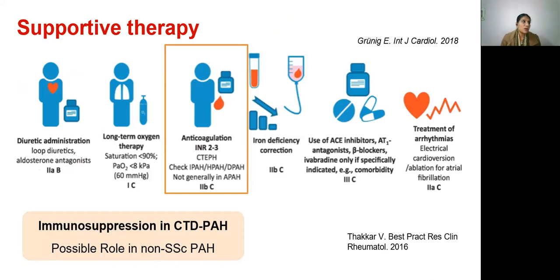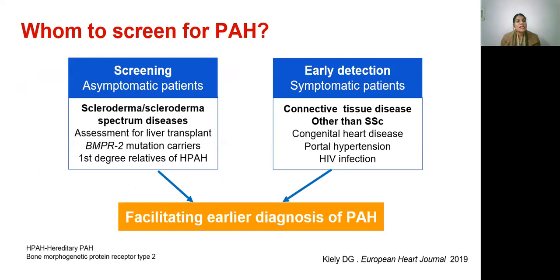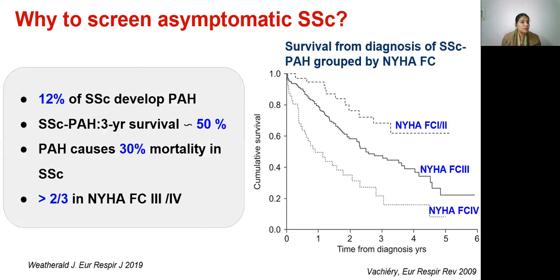Screening for asymptomatic patients is recommended in scleroderma and scleroderma spectrum diseases. In other connective tissue diseases, evaluation for pulmonary hypertension is recommended only if patients are symptomatic. Why screen asymptomatic scleroderma? Because 12% of scleroderma patients develop PAH, 3-year survival is 50%, PAH accounts for 30% mortality in scleroderma, and more than two-thirds are in NYHA functional class 3 or 4 at the time of PAH diagnosis. It is hoped that by screening, patients can be detected in NYHA class 1 and 2 and treated, leading to better outcomes.